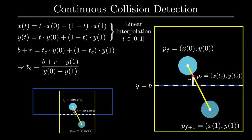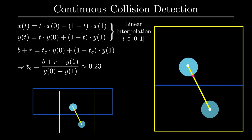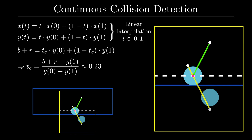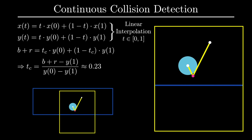In our particle example, tc happens to be about 0.23. Now that we have the time of collision, the second part of continuous collision detection is to figure out the change in trajectory after the collision. This can be done with some simple geometry. Now that we have the point of collision, the rest of the trajectory is just the original trajectory flipped over a horizontal line passing through our point of collision. The reason this works is because after a collision, the y component of our velocity is flipped, which geometrically is equivalent to this reflection. We now have a corrected trajectory, which we pass into our animation engine — and this is a nice solution to tunneling.